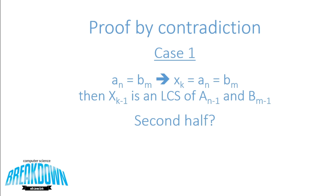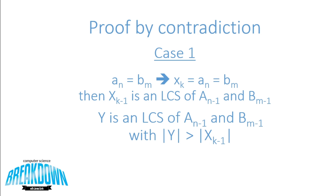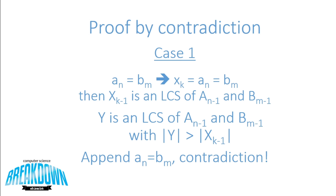Now we need to approach the second half: X of K minus one is an LCS of A to N minus one and B to M minus one. We use a proof very similar to the first half. Consider Y, an LCS of A at N minus one and B of M minus one, whose length is strictly greater than X of K minus one. If we append A of N equals B of M — the last characters of A and B — to Y, it will have length strictly greater than K, but that's a contradiction because we assumed K was the length of the LCS of A and B. So now we're done with case one.